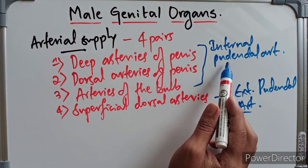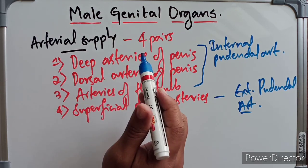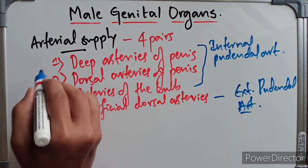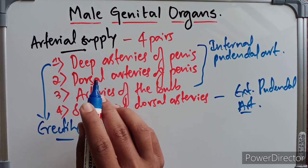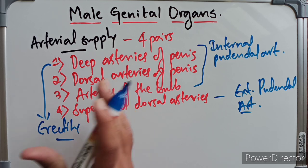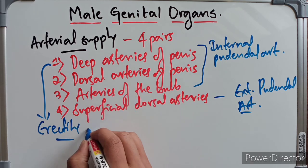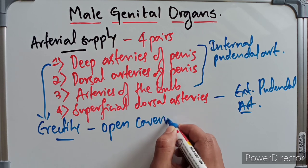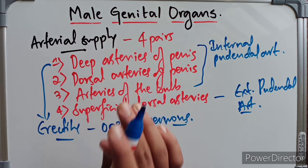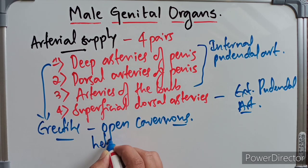The penis is supplied with blood chiefly by the deep arteries, which are the principal vessels for filling the lacunae in the erectile tissue, and they help in the erection of the penis. Each deep artery of the penis runs lengthwise in the corpus cavernosum and gives off numerous branches. These arteries also give rise to minute arteries which directly open into the cavernous spaces. In the flaccid state of the penis, these vessels project into the lacunae and are called the helicine arteries.